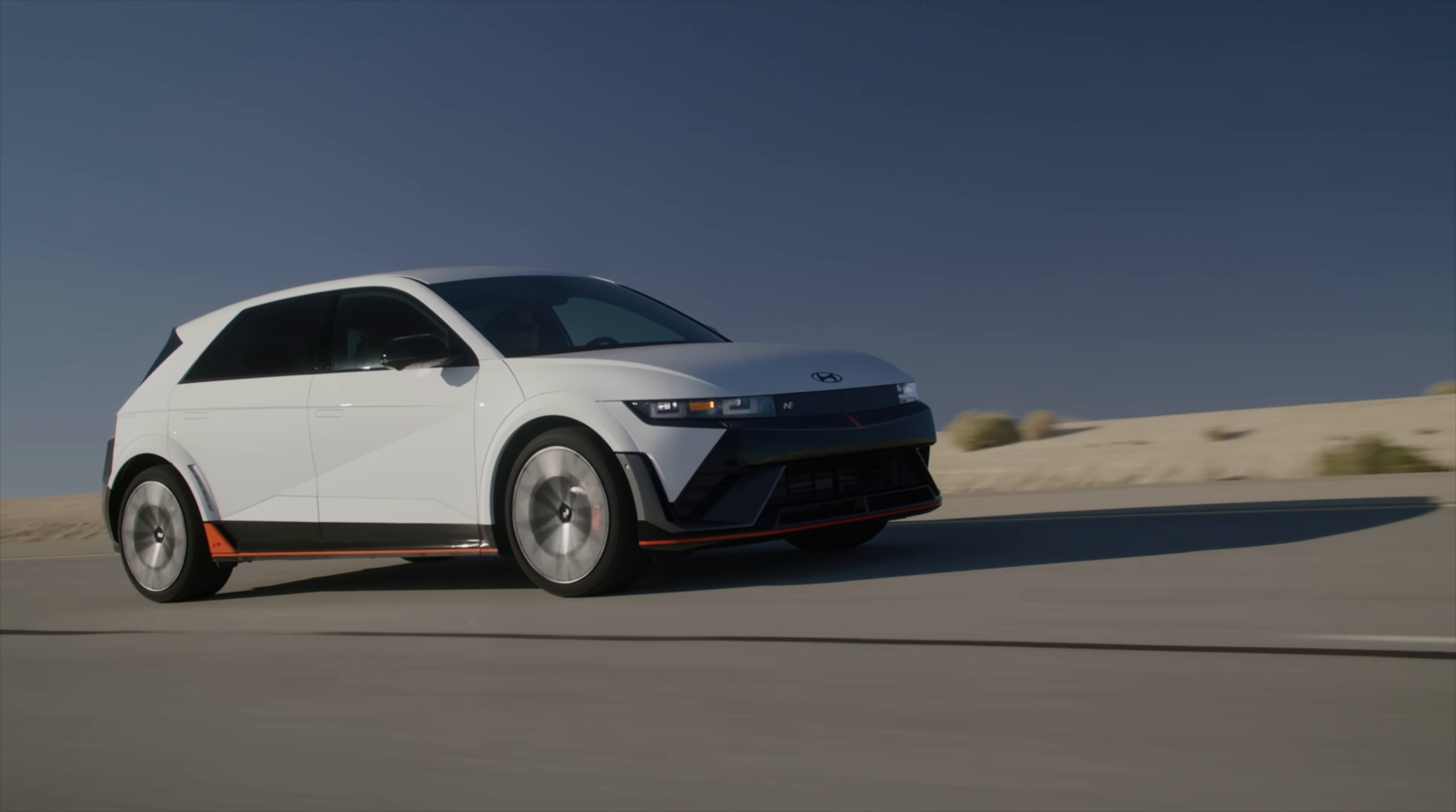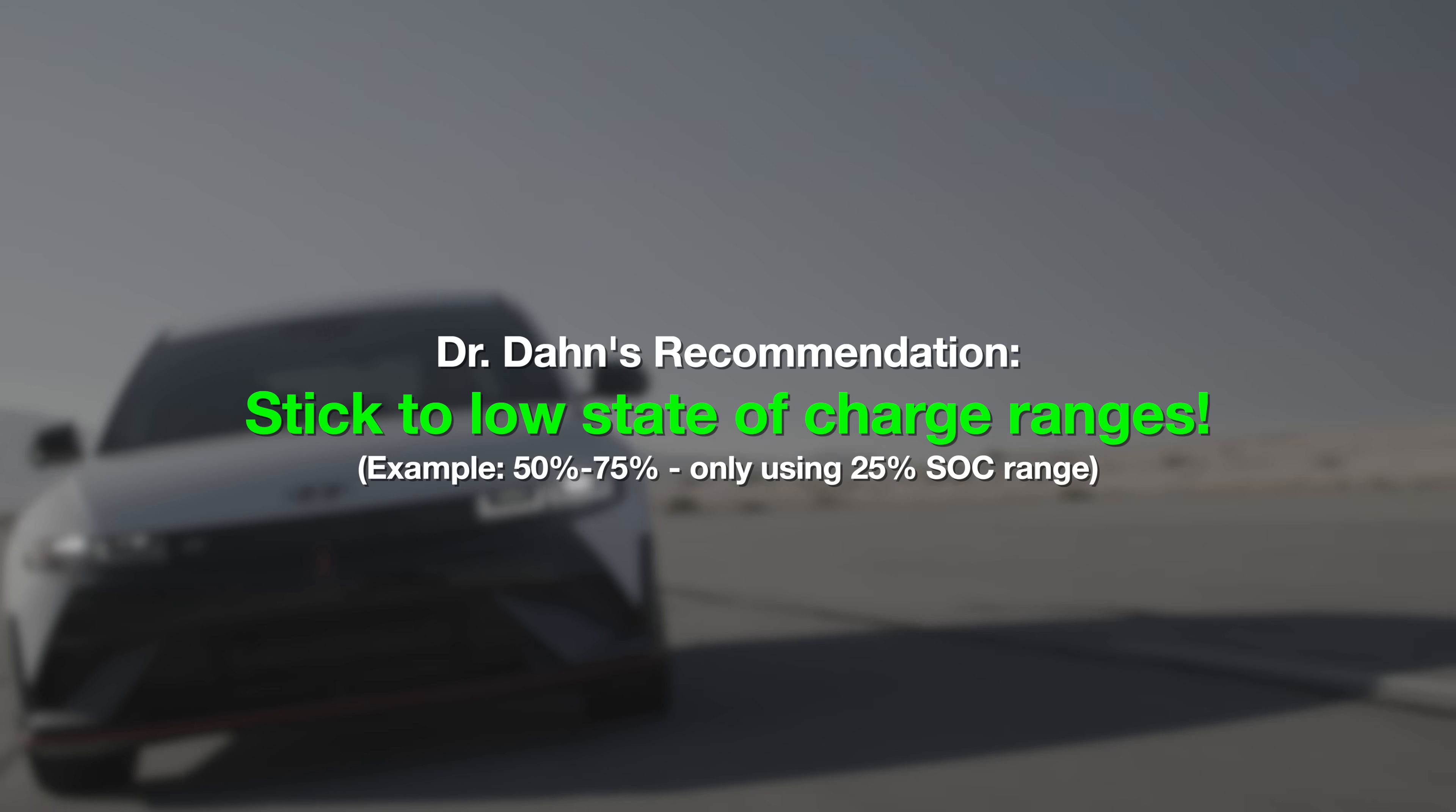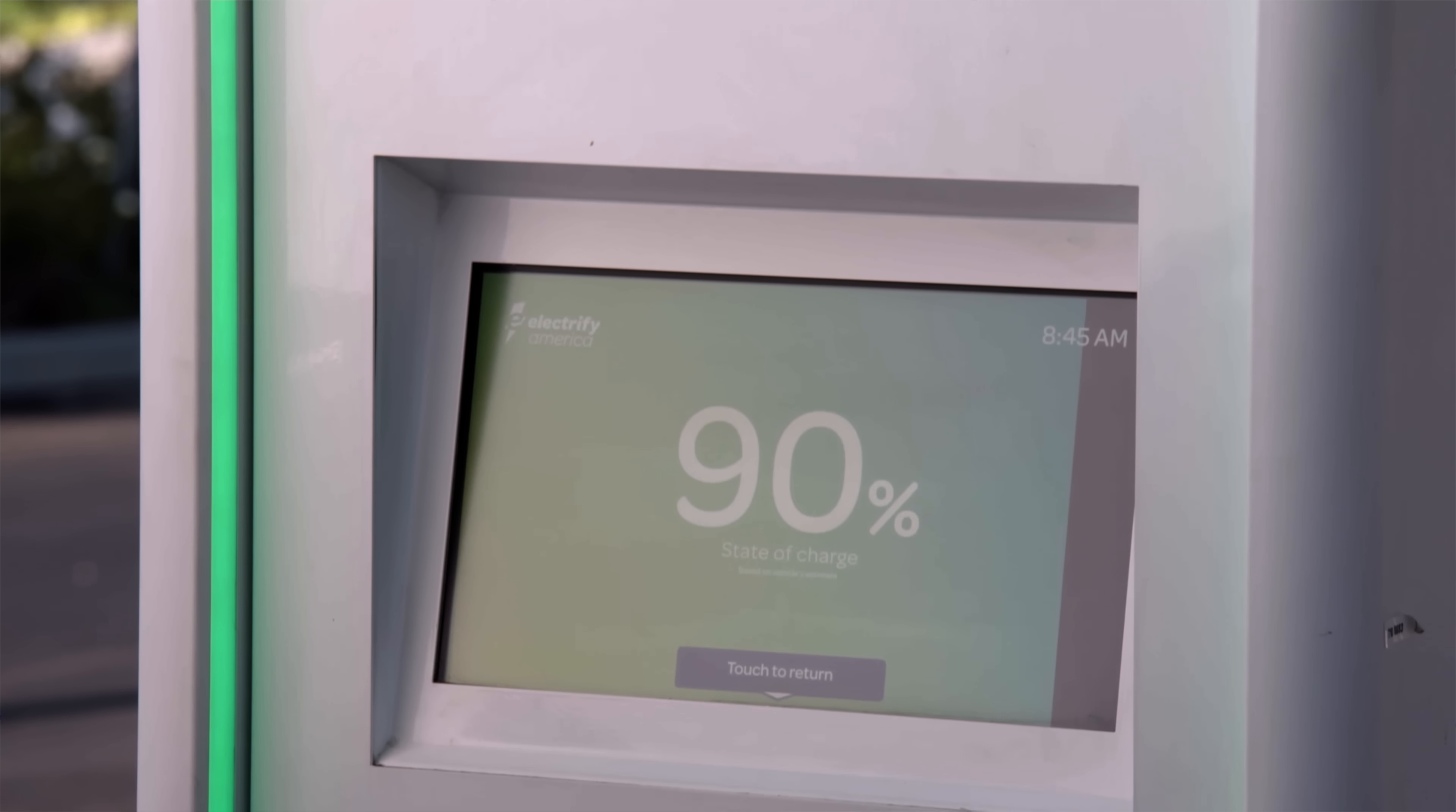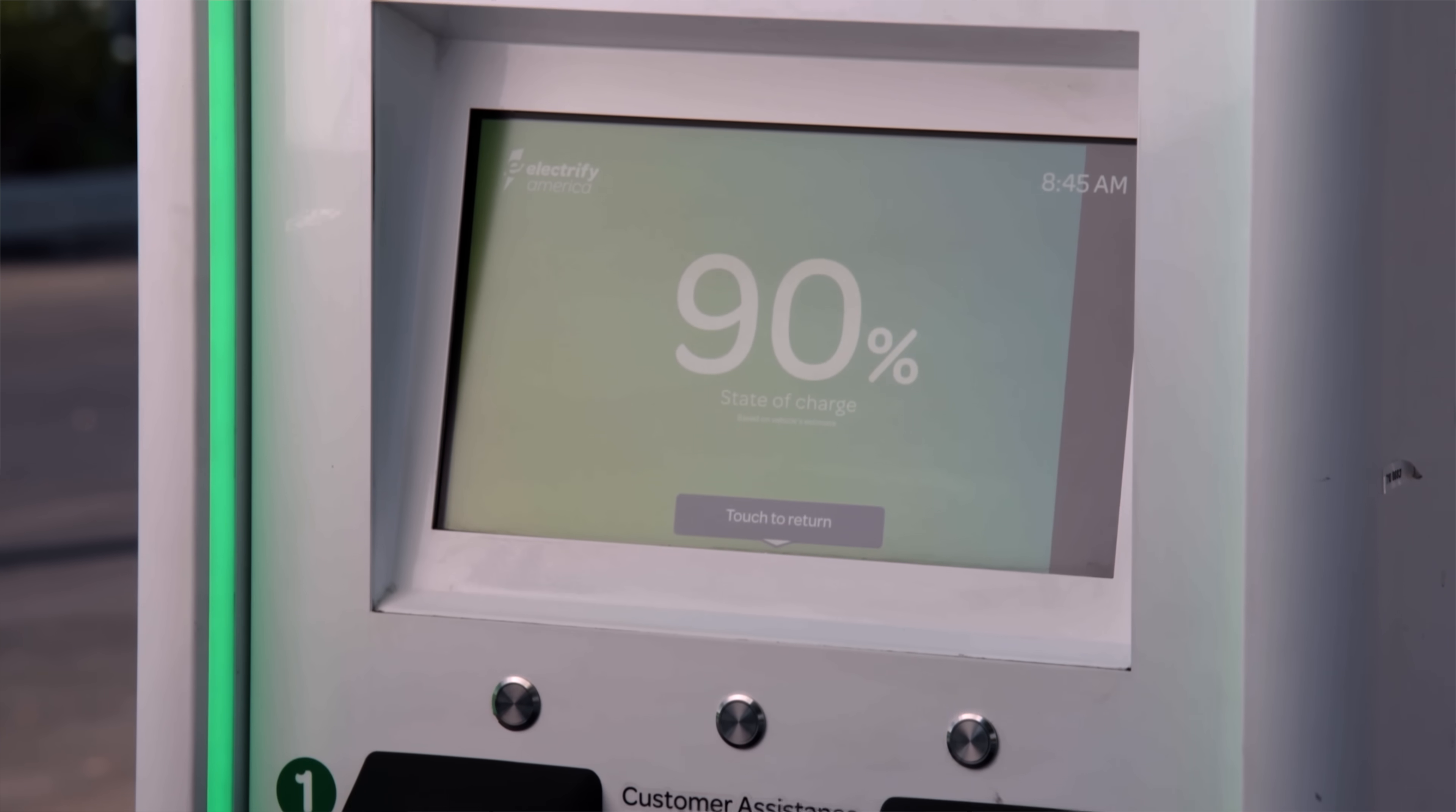Alright, so what does Professor Jeff Dahn recommend? He says stick to low state of charge ranges. 25% is great. Now obviously if you can't charge at home, this is tough to do, which is fine. If you follow the next rule, he says your battery will still very likely outlast the life of the car.